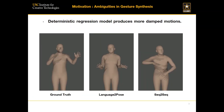Here I want to show some examples of how the result would look like if we try to use the deterministic regression model to learn the gestures. On the left is the ground truth, and on the right we pick two baseline models that use deterministic regression.